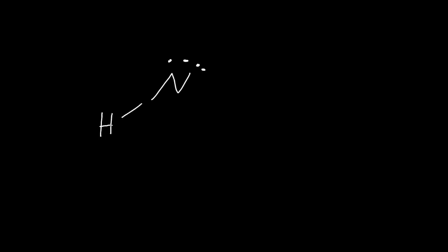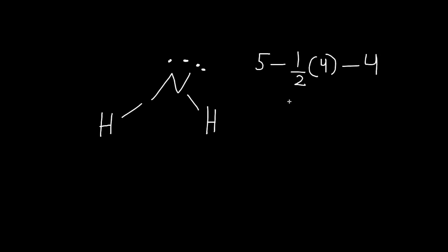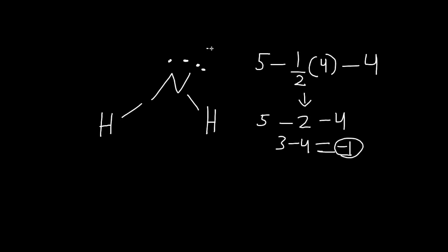If we have another example — nitrogen connected to two hydrogens — to calculate the formal charge, the valence electrons for nitrogen is five, minus one-half times bond lines. Two bonds is four electrons, minus the lone pairs — there are two lone pairs, so four electrons. Half of four is two, so it's five minus two is three, minus four, which gives us negative one. So this nitrogen has a negative charge.